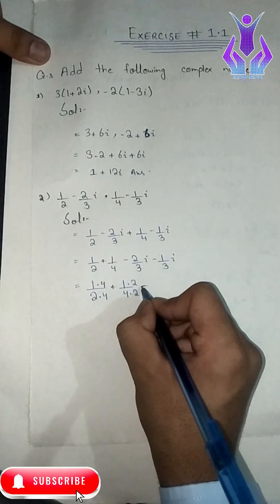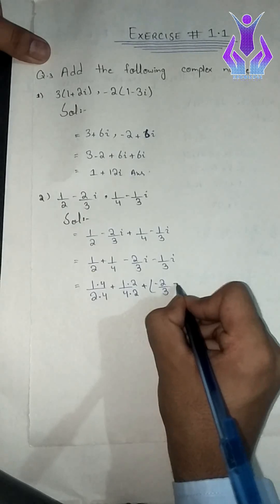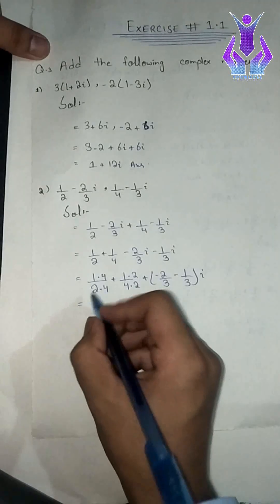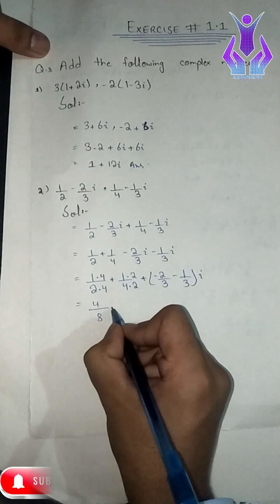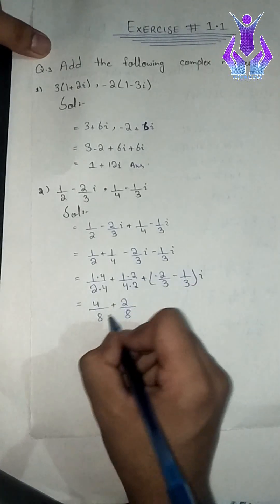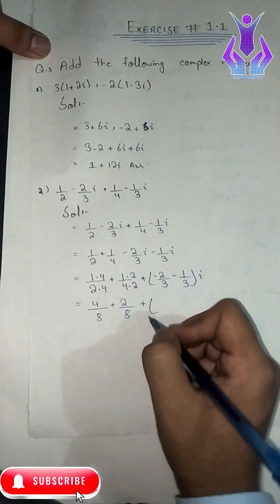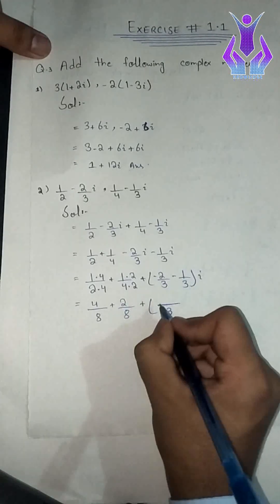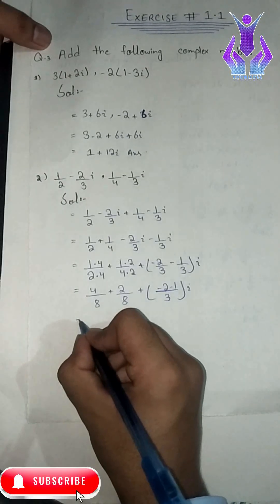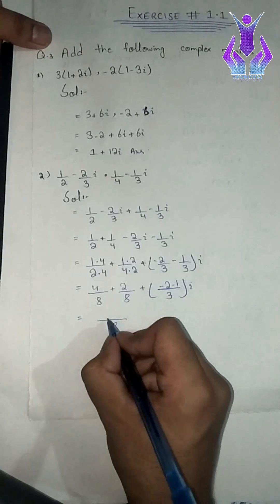Minus 2 by 3 iota, minus 1 by 3 iota. For the real part denominator, 4 into 1 is 4, and 4 into 2 is 8. Plus 2 divided by 8. Taking the LCM, we get 8 as the common denominator.